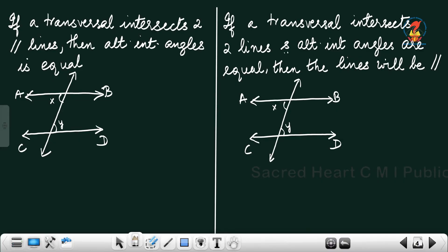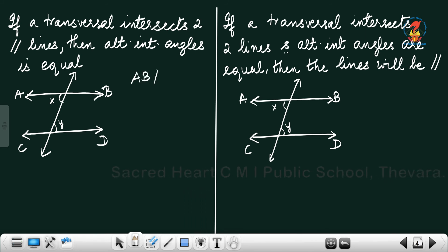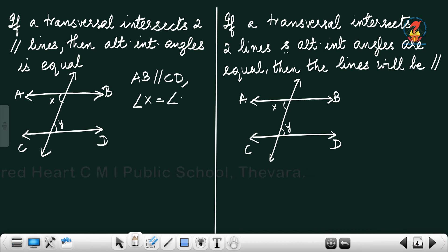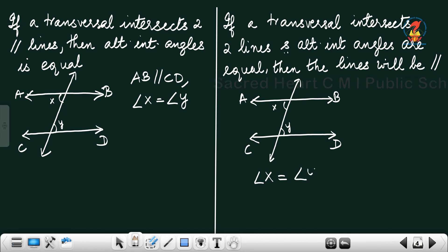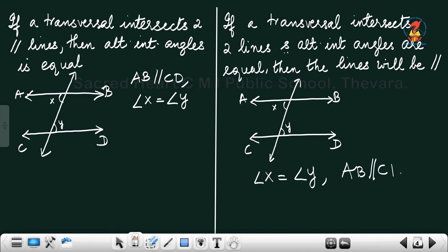The same applies for alternate interior angles. If a transversal intersects two parallel lines, where AB is parallel to CD, then alternate interior angles X and Y are equal. Conversely, if a transversal intersects two lines such that the alternate interior angles are equal, then the lines will be parallel. If angle X equals angle Y, then the lines will be parallel.